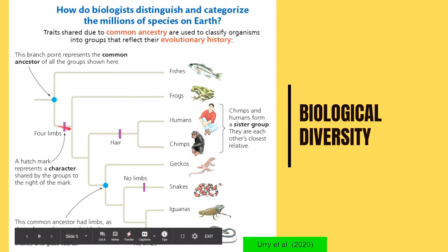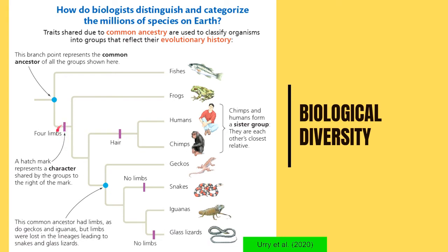Eventually, as time went by, some of them evolved to have a characteristic such as having four limbs. A hatch mark on the tree represents a character shared by the groups to the right of the mark. For example, this group evolved to have four limbs, while this one did not — those eventually became the different species of fish. The rest, having four limbs, evolved to become frogs, humans, chimps, and the rest.